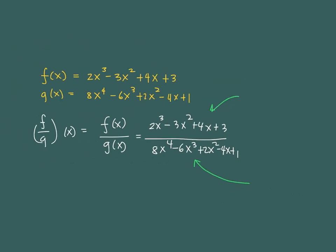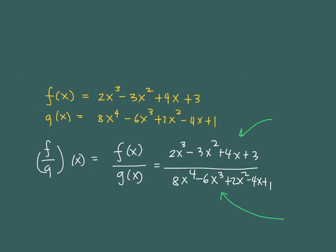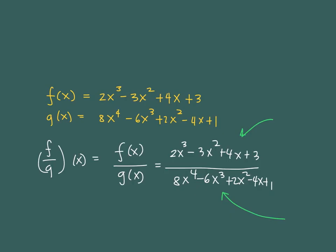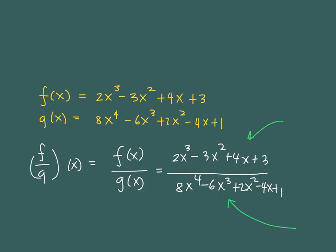We simply supply the expression for f of x in the numerator and place it there, and then for g of x being the denominator, we copy that expression and place it in the denominator.